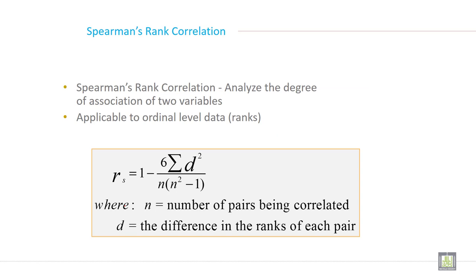Now, Spearman rank correlation. We have already discussed Spearman rank correlation when we were discussing correlation — Pearson and Spearman — so no need to go into detail. Just to recap: Spearman rank correlation analyzes the degree of association of two variables, or two qualitative variables, applicable to ordinal level data and ranks only.